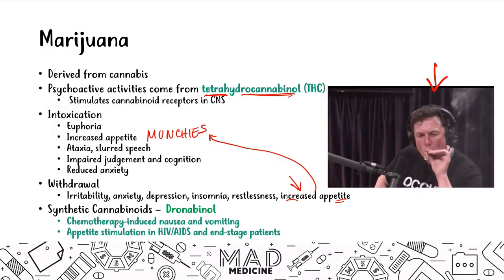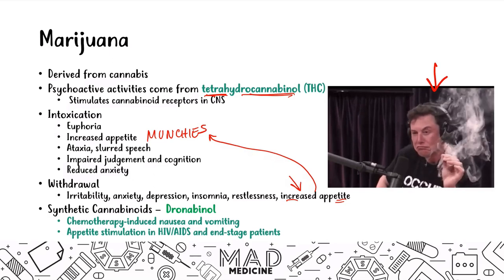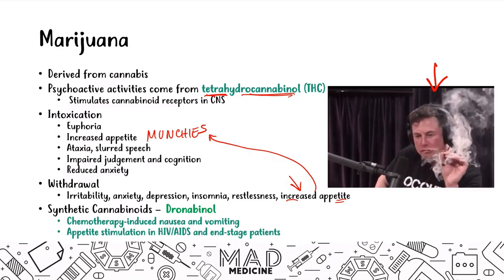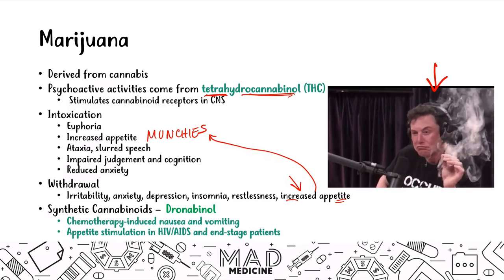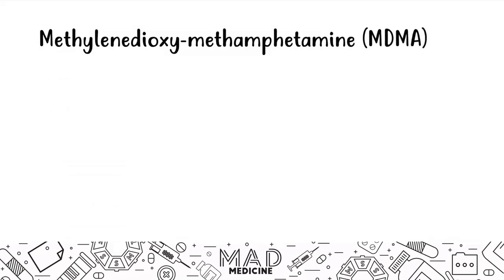That's why marijuana is classified as a hallucinogenic psychoactive drug, not just a CNS depressant as you might expect. Next, let's talk about methylenedioxymethamphetamine — MDMA, also known as ecstasy.